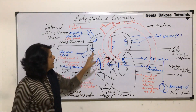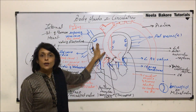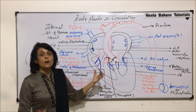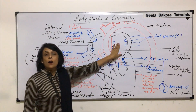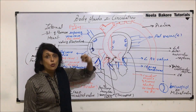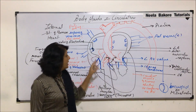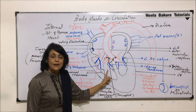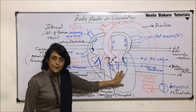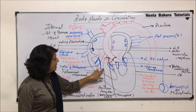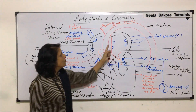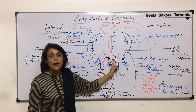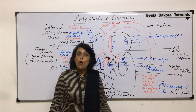To sum up: the right auricle receives deoxygenated blood from all body parts through the superior and inferior vena cava, and the coronary sinus brings blood from the heart wall. The left auricle receives oxygenated blood from both lungs through four pulmonary veins, two from each side. When auricles contract, blood is pumped into the respective ventricles. The right ventricle sends deoxygenated blood to the lungs via the pulmonary artery, and the left ventricle sends oxygenated blood to all body parts via the aorta.